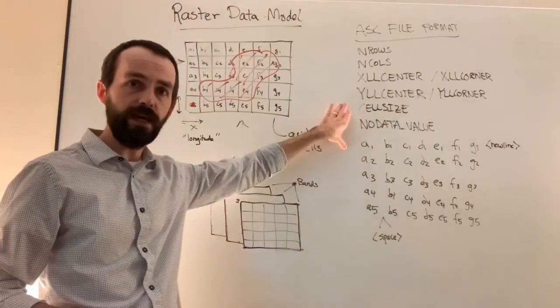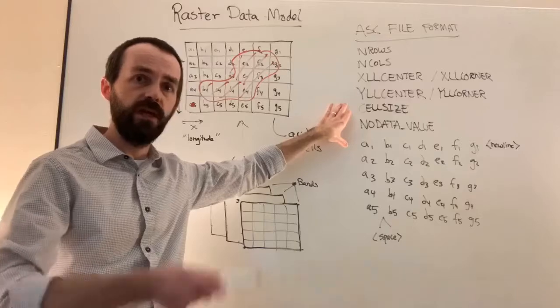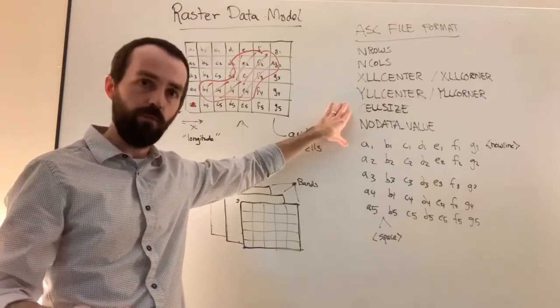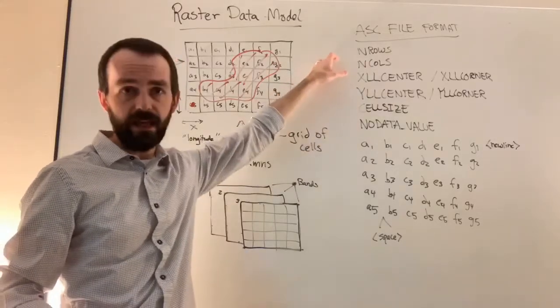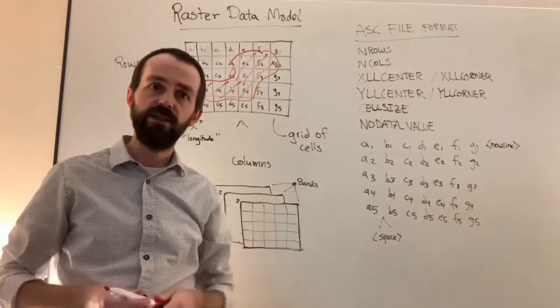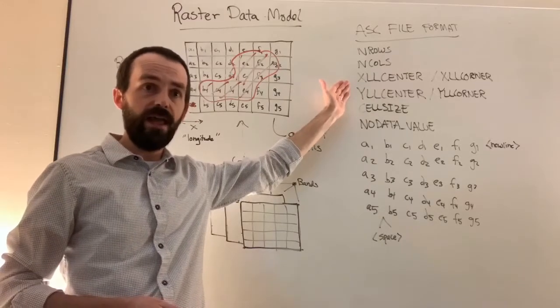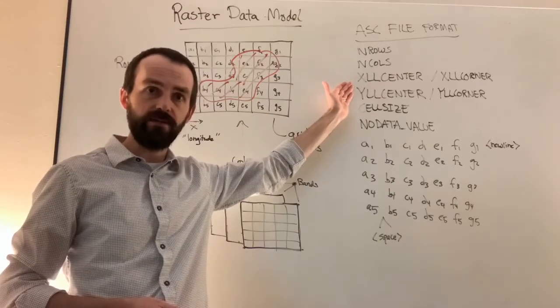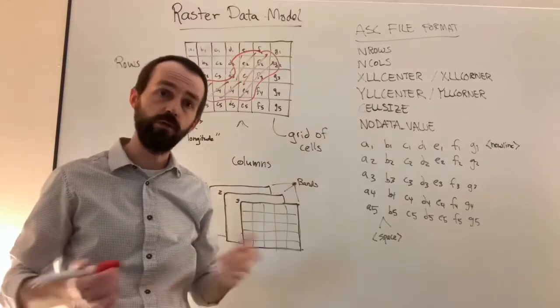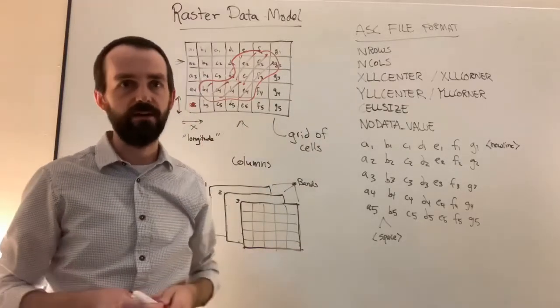ACI raster formats are plain text, so they can be without a file extension, .txt, or more traditionally .asc. So your job for this new sandbox challenge is to create a plain text file in ACI raster format to represent whatever you want in space. And what we'll do is we'll take a look at them next week to see how they turned out.